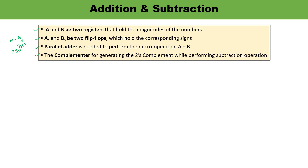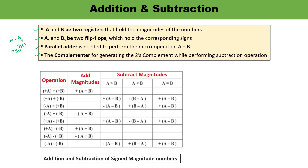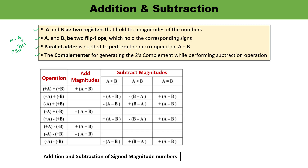In general, there are three ways to represent negative fixed-point binary numbers: signed magnitude, signed one's complement, and signed two's complement. Most computers use signed two's complement representation when performing arithmetic operations with integers. This table was already discussed in the previous video, but to give you a review about the hardware algorithm flowchart, you must review it.